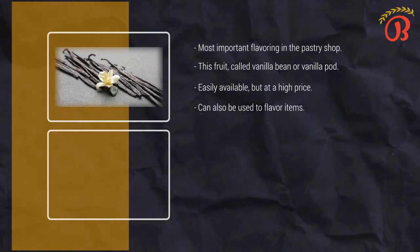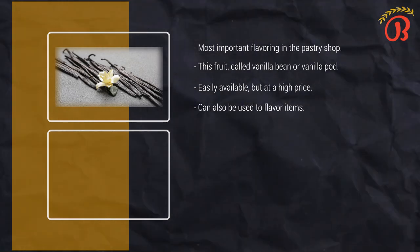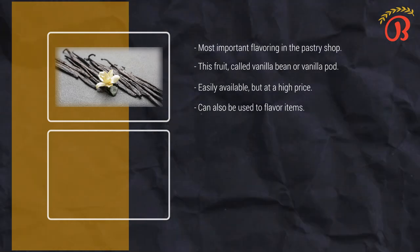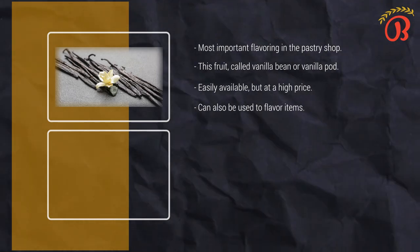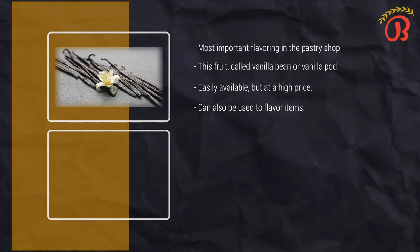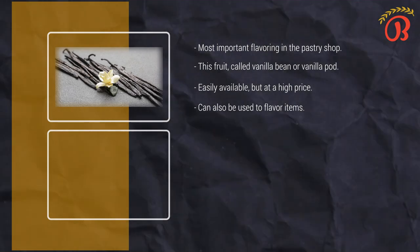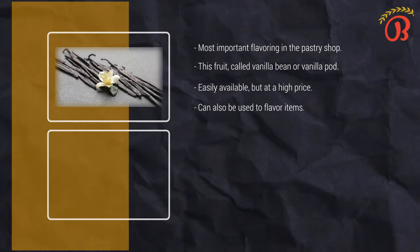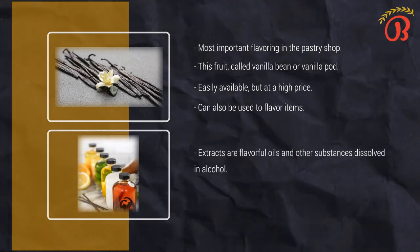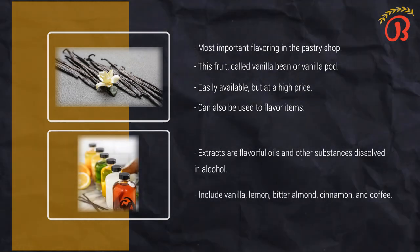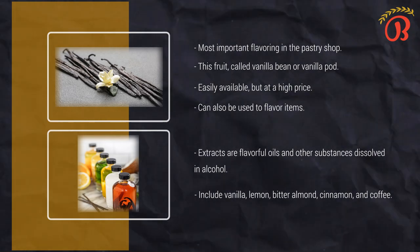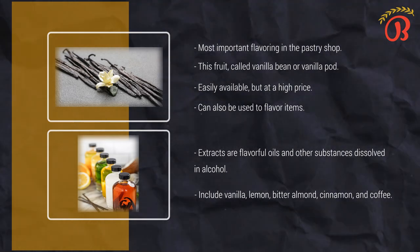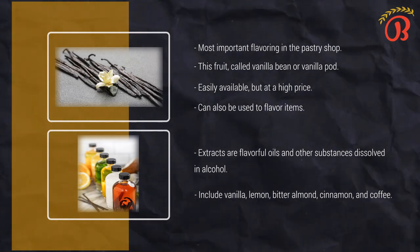A more common and economical way of flavoring with vanilla is to use vanilla extract. Vanilla extract is made by dissolving the flavoring elements of vanilla beans in an alcohol solution. If a formula calls for vanilla beans, there is no exact equivalent if you must substitute vanilla extract, because the strength of flavor extracted from the bean depends on many factors such as how long it was left in the liquid or whether it was split. However, a rule of thumb is to substitute half to one teaspoon extract for each vanilla bean. Extracts are flavorful oils and other substances dissolved in alcohol. These include vanilla, lemon, bitter almond, cinnamon, and coffee. Coffee extract can be approximated if it is not available — dissolve 5 ounces of instant coffee powder in 12 ounces of water.